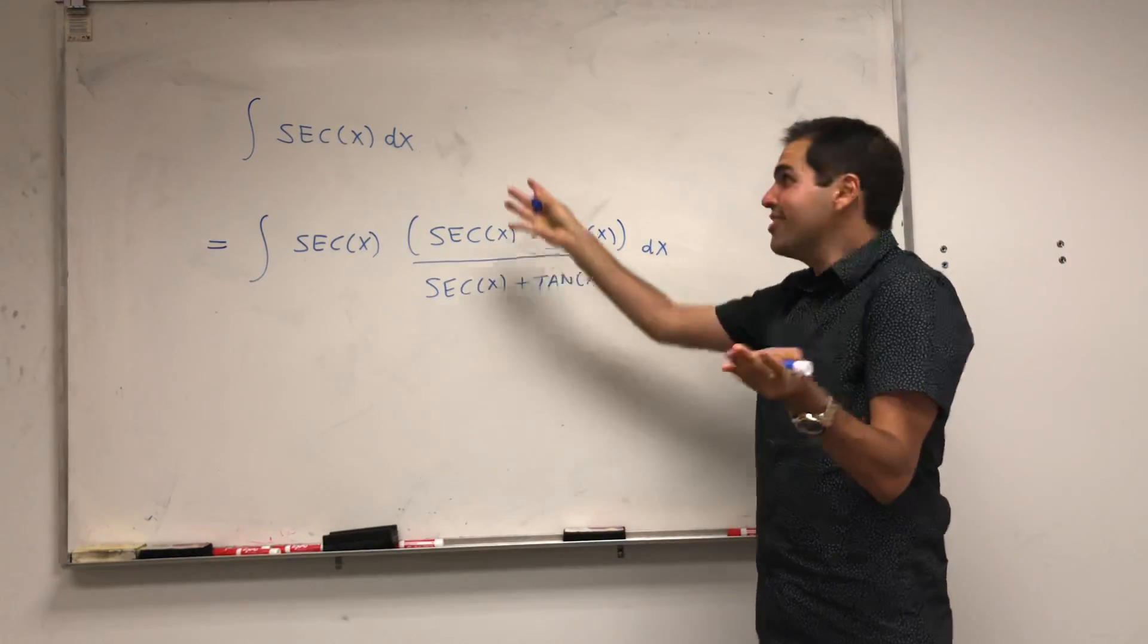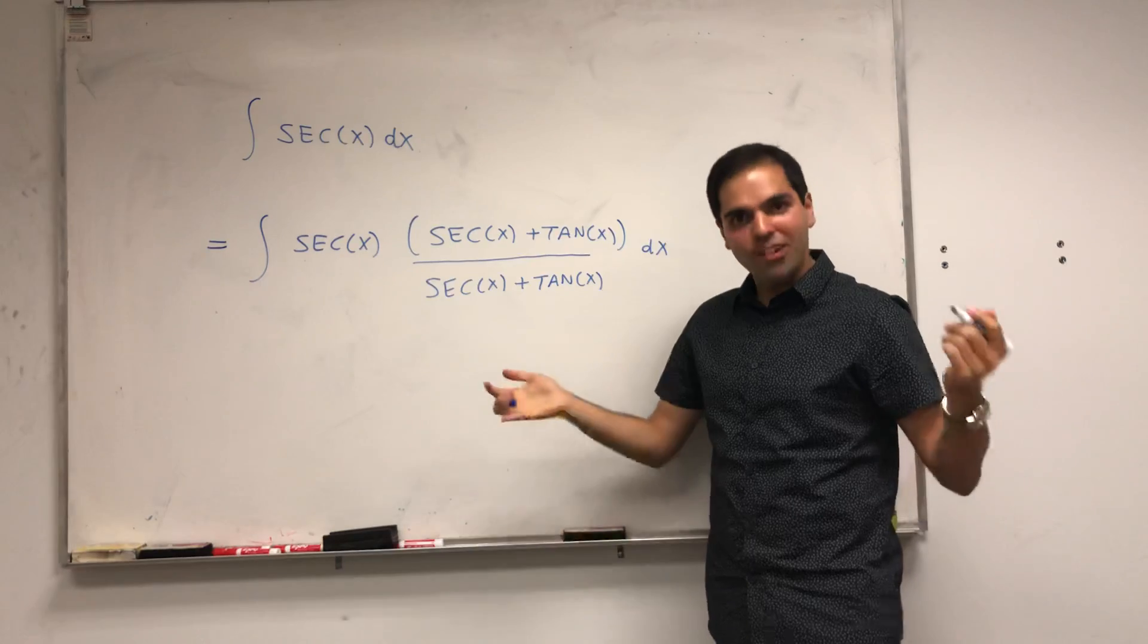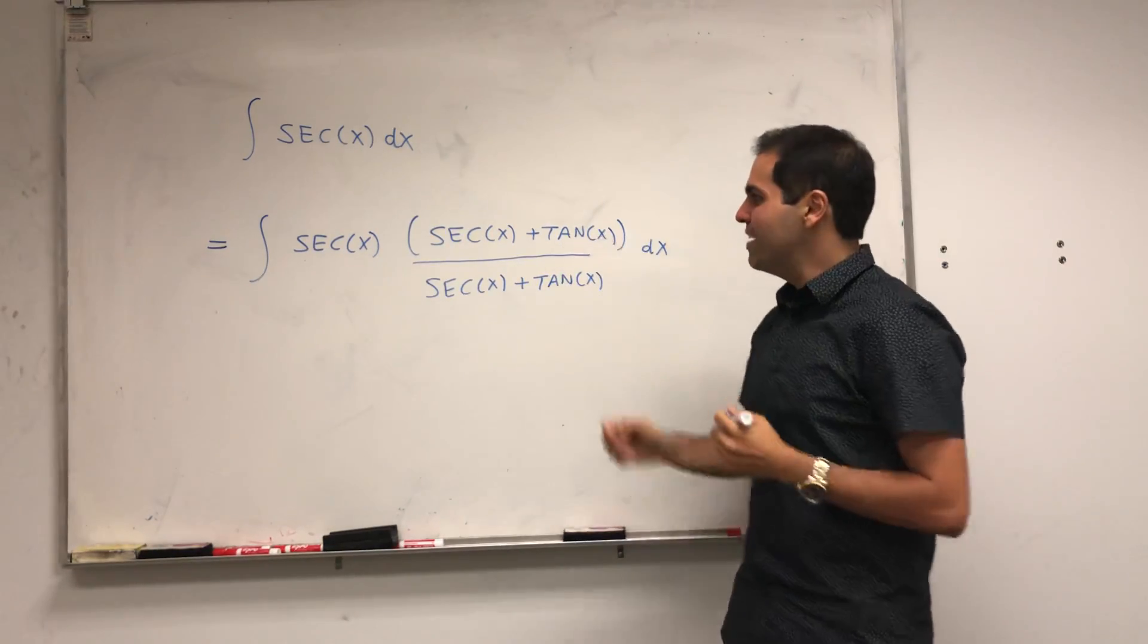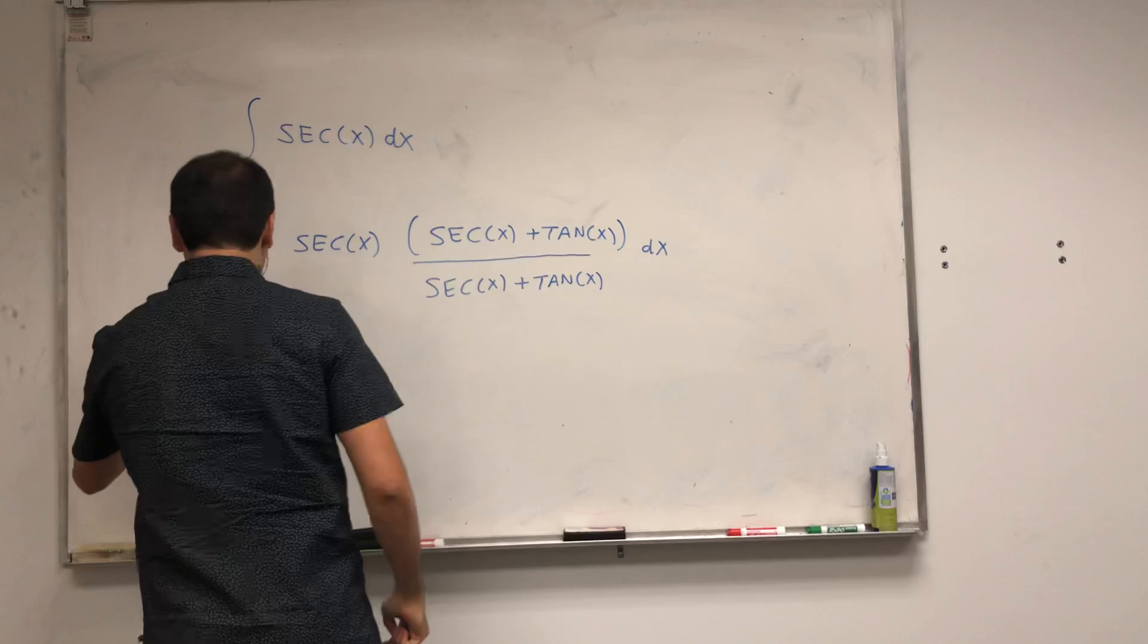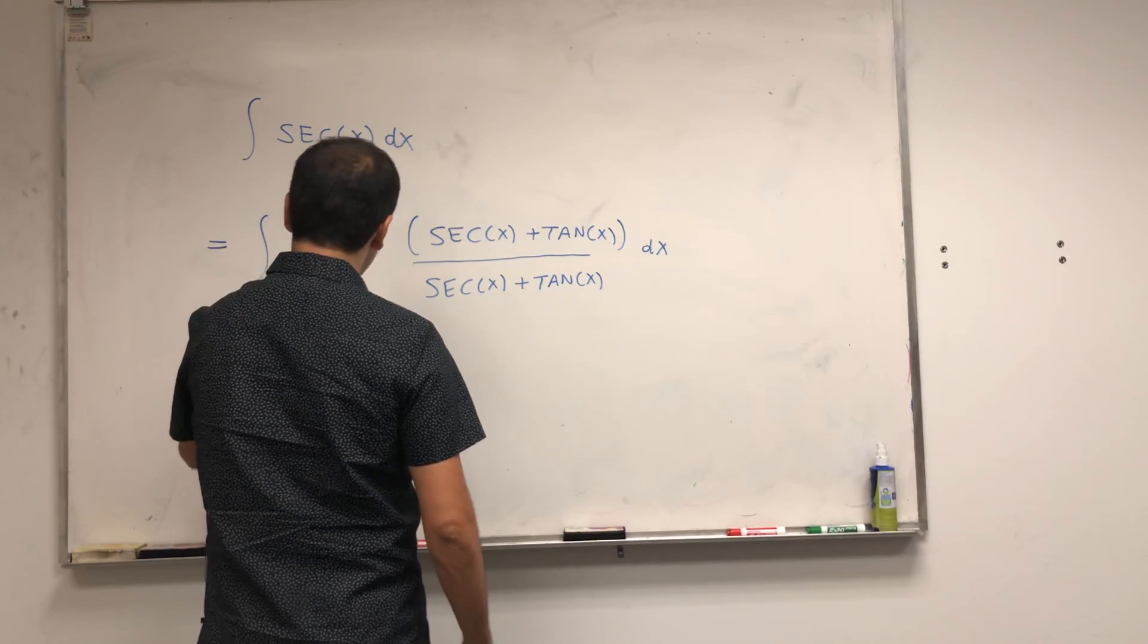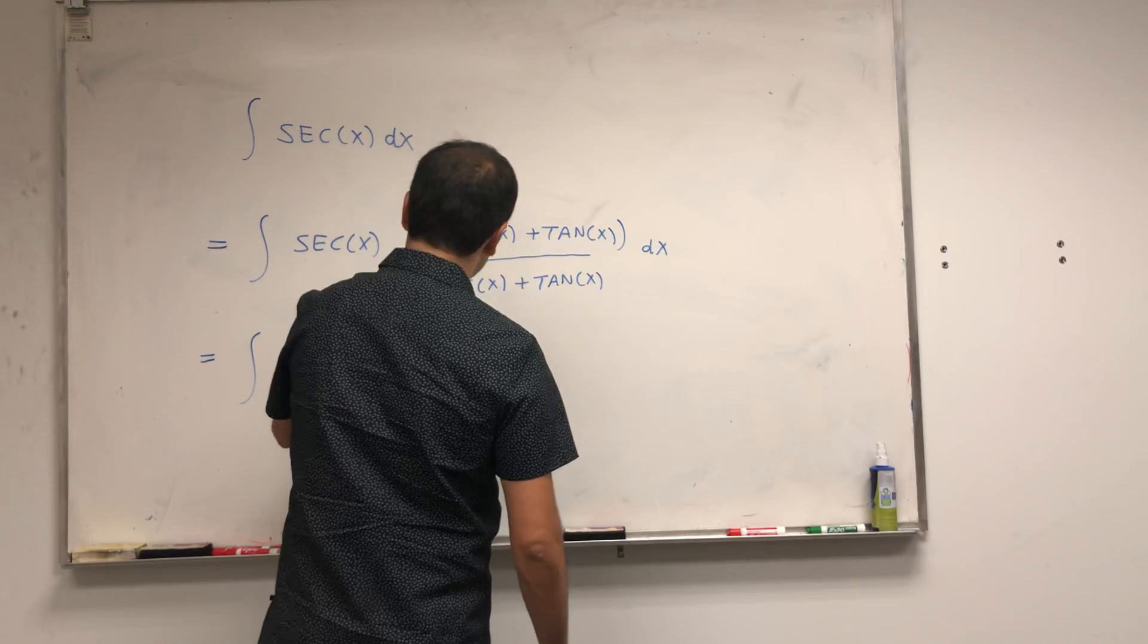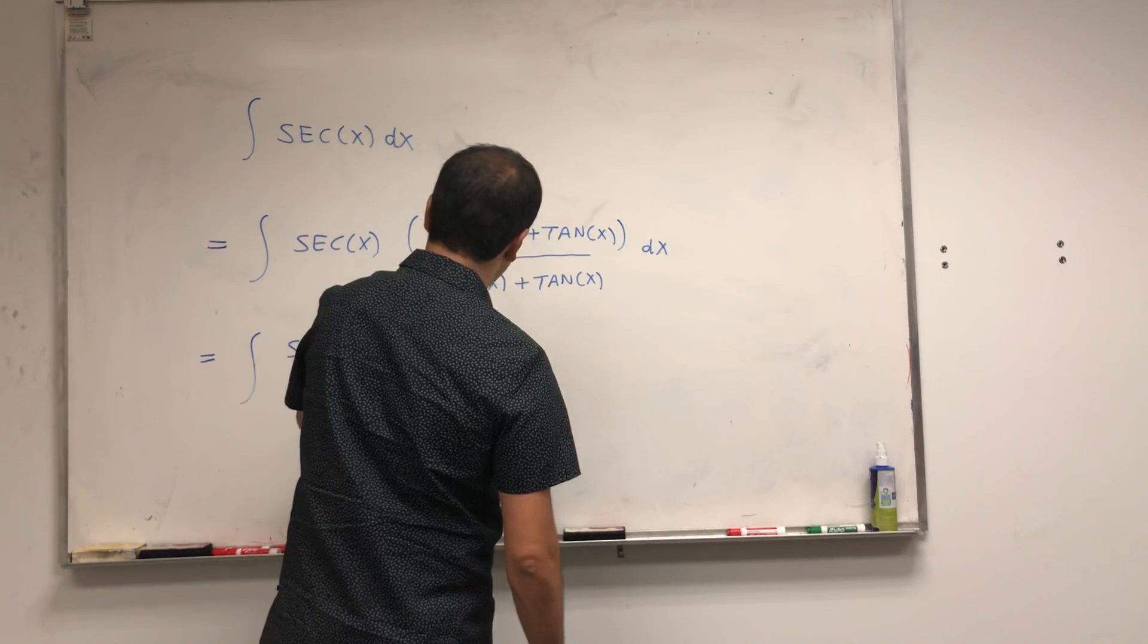And again, it looks like we made this integral crazy complicated, but in math, sometimes you have to make things complicated to evaluate the integrals, because then we have secant squared of x plus secant x tangent of x.